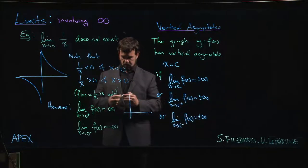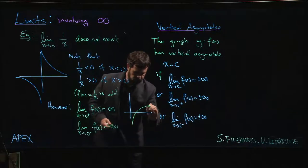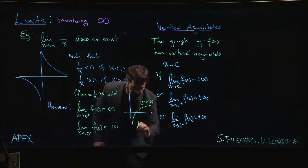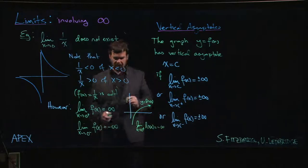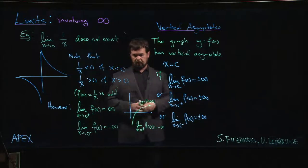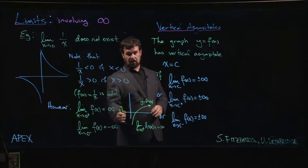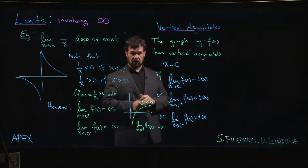Think about the natural log: y equals the natural log of x has the property that the limit as x approaches zero from the right is minus infinity. We certainly would say that the natural logarithm has a vertical asymptote at zero, even though it's not even defined to the left of zero. Because the right-hand limit is minus infinity, there's a vertical asymptote there.